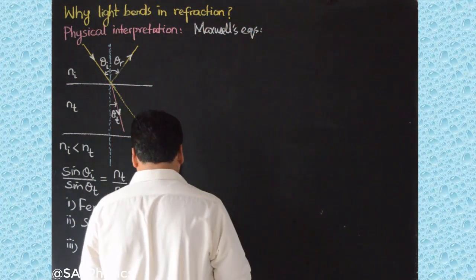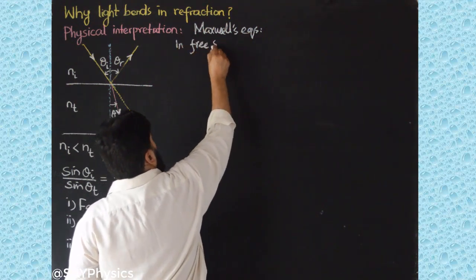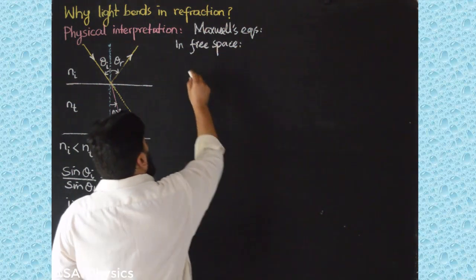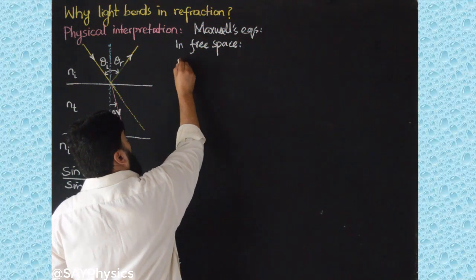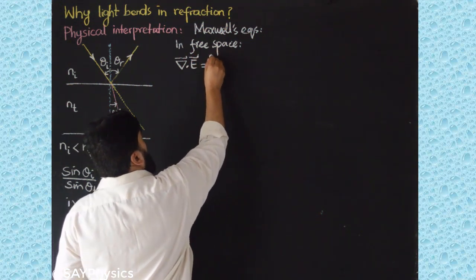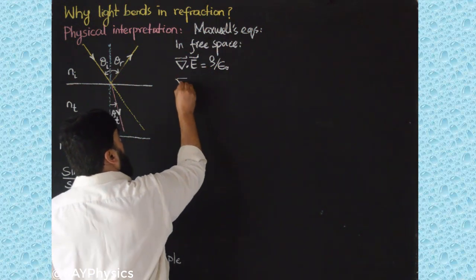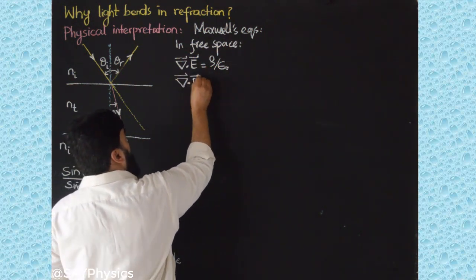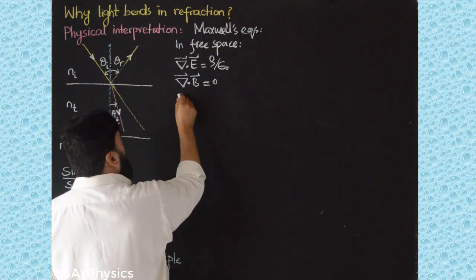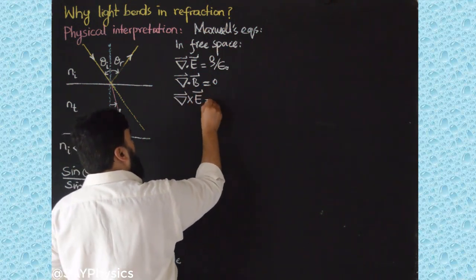Maxwell equations. Now we know that in free space, the set of Maxwell equations are that the divergence of electric field is the charge density divided by the permittivity. The divergence of magnetic field is equal to zero; there is no magnetic charge there so it will not diverge.